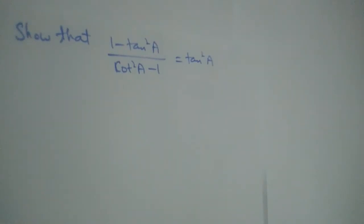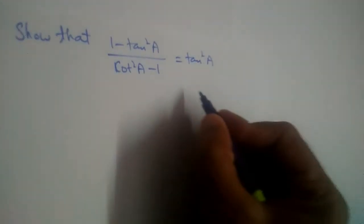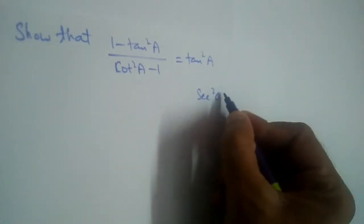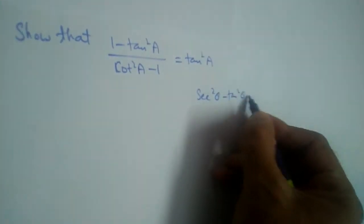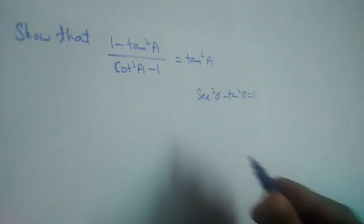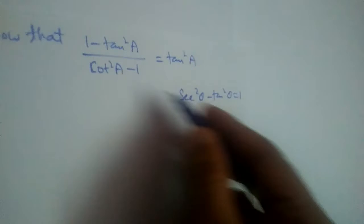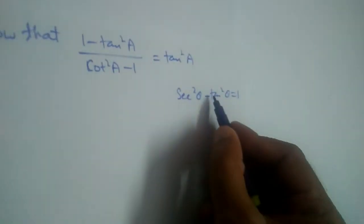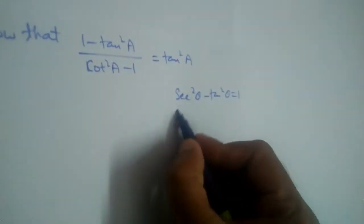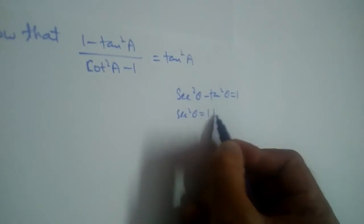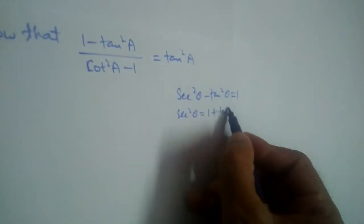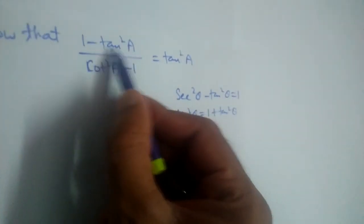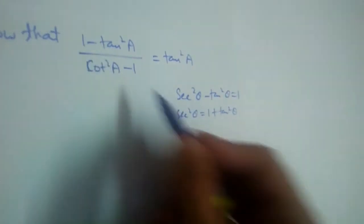It looks like we can apply the identity secant squared minus tan squared equals 1. But observe carefully — if we send tan to the other side, it becomes 1 plus tan squared. We do not have 1 plus tan squared here; we have 1 minus tan squared. So we cannot apply this identity.